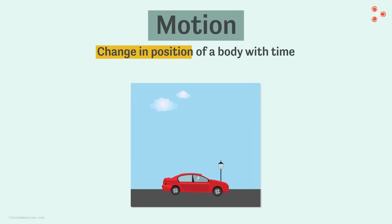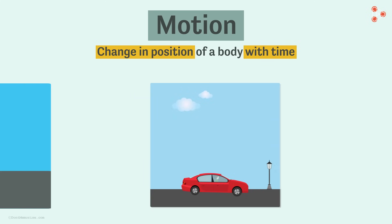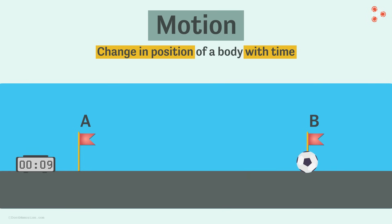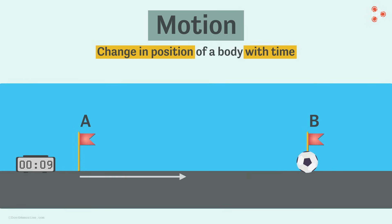Change in position with time. For example, when an object is moving from point A to point B, it's changing its position with time. We saw that the time is also changing along with the position, so it is undergoing motion.